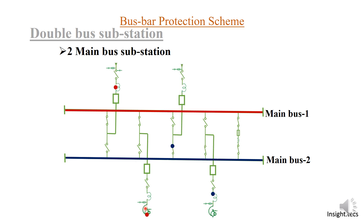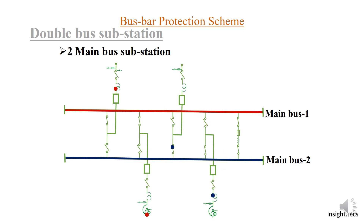When the bus coupler is made on, power is connected from both buses. Depending on the load and current, if there is more requirement of power on bus one, power will flow from bus two to bus one through the coupler, and vice versa — the flow of power will be maintained.